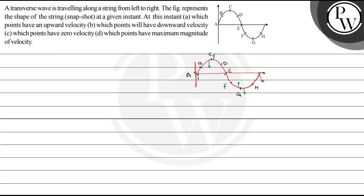Let's read the question. A transverse wave is traveling along a string from left to right. The figure presents the shape of the string — a snapshot at a given instant. At this instant: A) which point will have upward velocity, B) which point will have downward velocity, C) which point will have zero velocity, D) which point will have maximum magnitude of velocity.